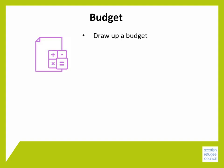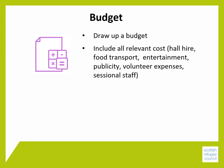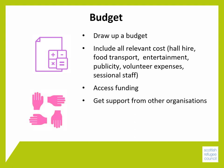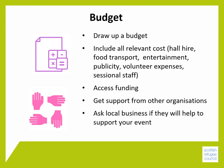Once you've made a basic plan for your event or service, draw up a budget — if you need support with this, have a look at module 7. Make sure you include all relevant costs associated with the event, such as hall hire, food, transport, entertainment, publicity, volunteer expenses, and sessional staff. If you already have the funds, great — if not, look for funding in module 6. You may also be able to get support from other organisations by working in partnership, or ask local businesses for help, such as a discount or donation.